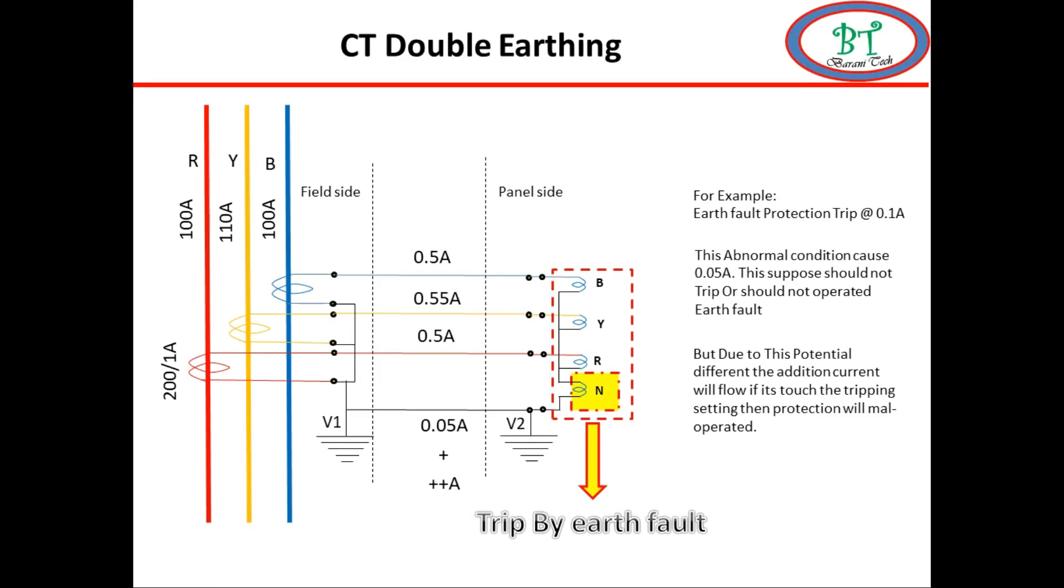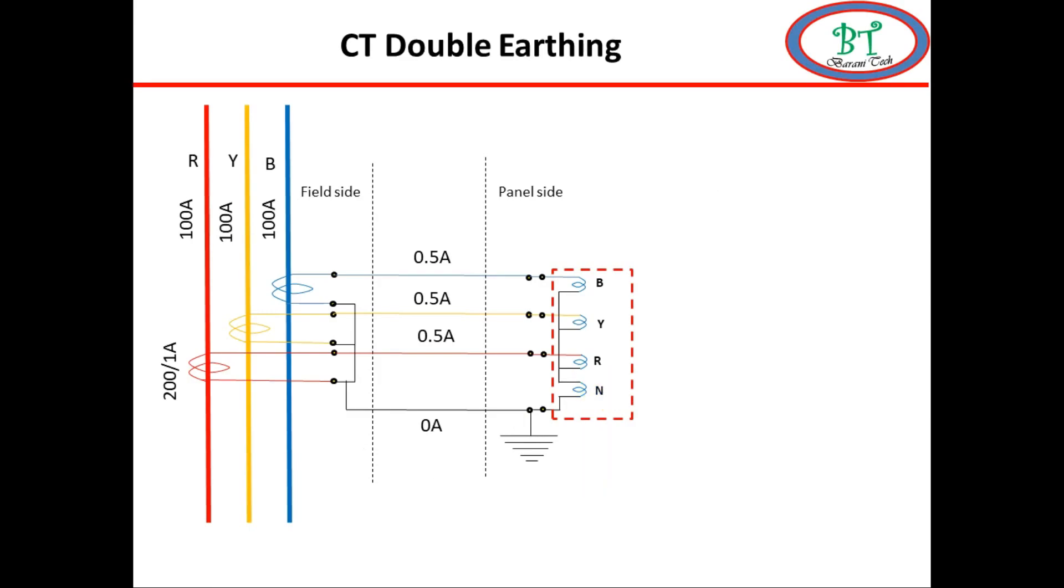Then everyone will ask question. If multipoint is not recommended then which point we have to do earthing. Or which is the good place for earthing. The answer is the star point on the panel side is the good place for earthing.